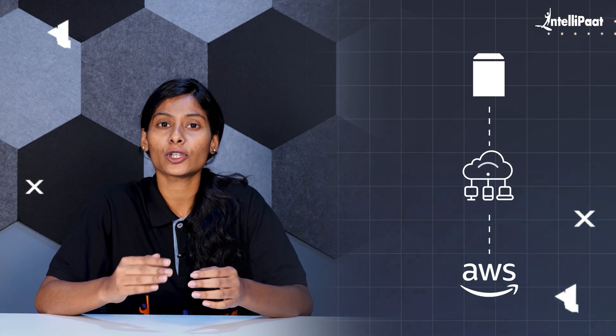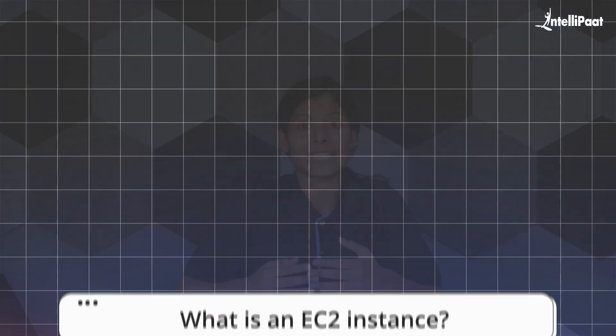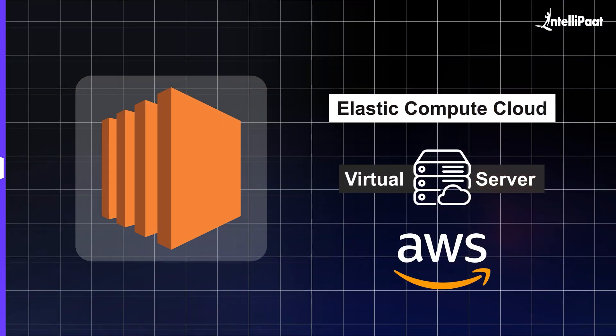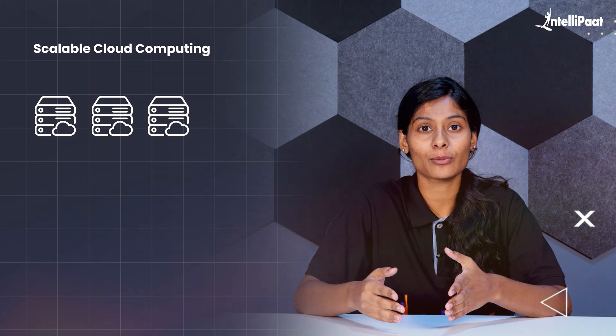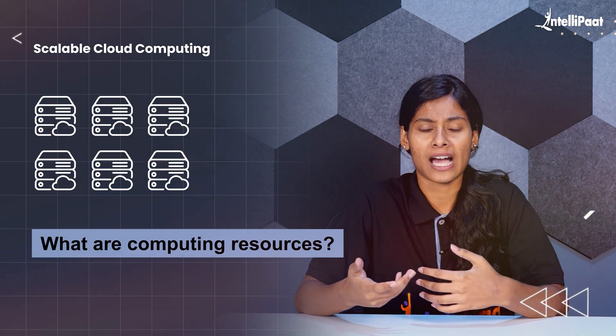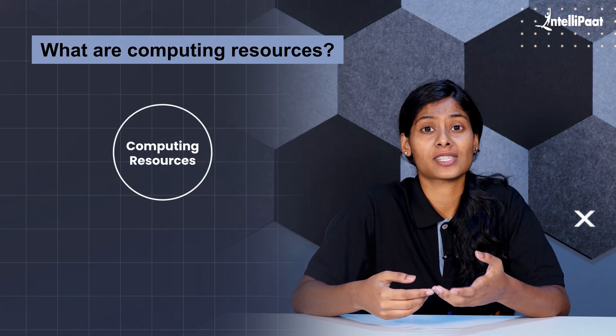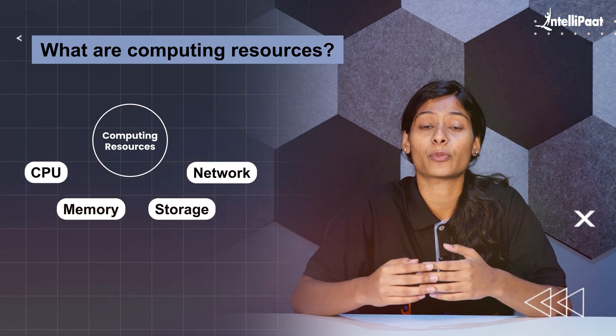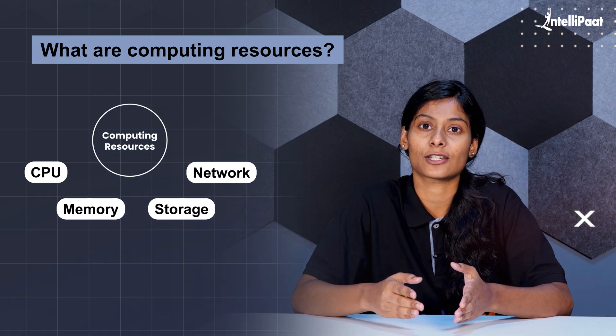Coming to technical terms, EBS is a cloud-based, persistent and scalable storage service provided by AWS for use with the EC2 instance. An EC2, or Elastic Compute Cloud, is a virtual server provided by AWS. These instances provide scalable cloud computing resources which can be customized according to our needs. These resources are nothing but CPU, memory, storage and networking capabilities provided by a particular EC2 instance.